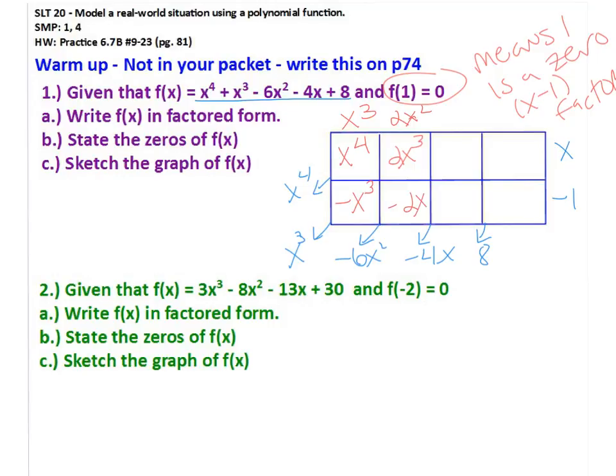And now 2x to the third divided by x is 2x squared. We can multiply that into this bottom box and we're going to subtract negative 6x squared minus negative 2x squared is negative 4x squared divided by x is negative 4x, multiply, subtract, negative 4x minus 4x is negative 8x. That's negative 8, negative 8 times negative 1 is 8. And then when we subtract, we should get a remainder of 0 because it's a factor, it should divide evenly.